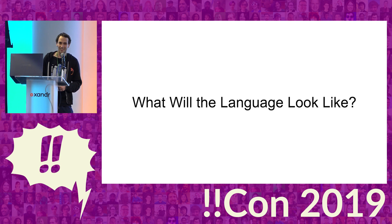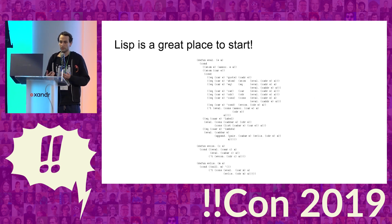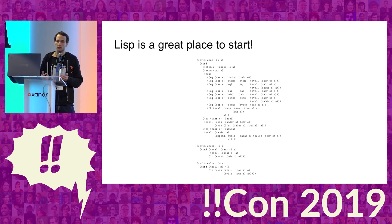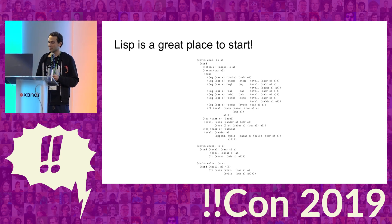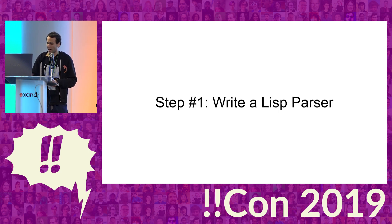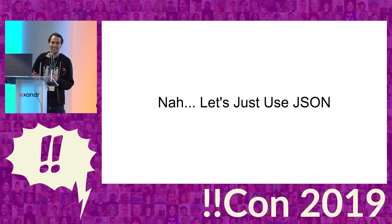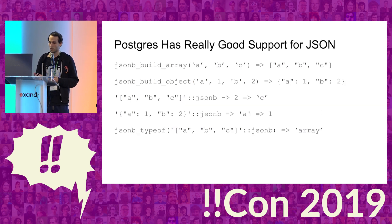So let's get started. The first thing we need to decide is what our language will look like. Lisp is a really great place to start — it's very easy to write a Lisp interpreter. This is actually a full Lisp interpreter made by Paul Graham. So our first step is to write a Lisp parser in SQL, but instead of doing that, we can just use JSON, where Postgres has extremely good JSON support.